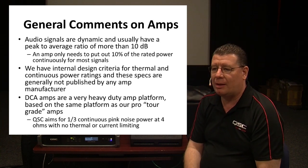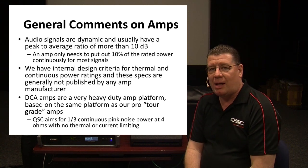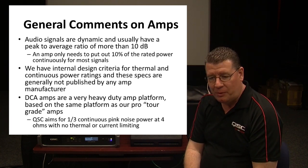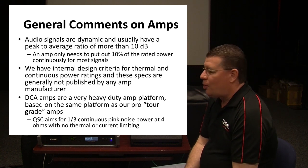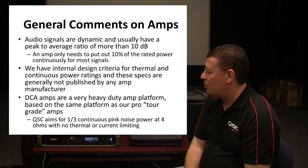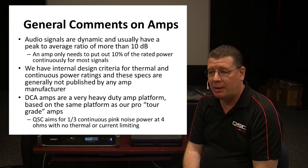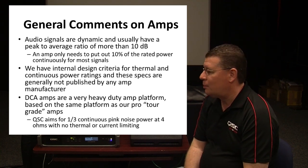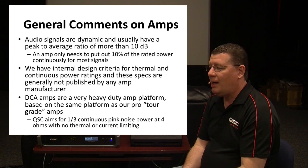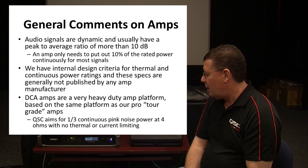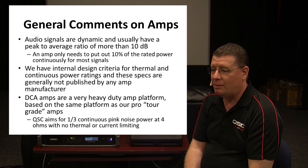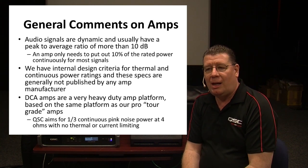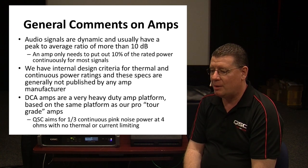DCA amplifiers, our historic amplifier line of choice for cinemas, are a very heavy-duty platform based on the same internal components as our tour-grade professional audio amplifiers. We aim for a rigorous one-third continuous pink noise power at 4 ohms with no thermal limiting or current limiting. Very few amplifiers are truly capable of one-third continuous operation. It is easily possible to build an amplifier that plays sine waves at a thousand watts continuously, but it would cost so much and would actually have lower performance than building an amplifier with higher voltage rails capable of higher peaks with real-world program material.